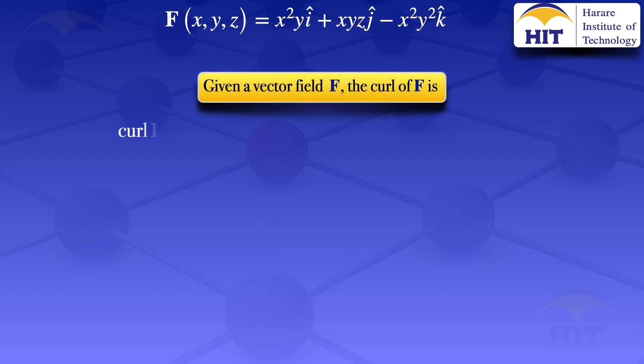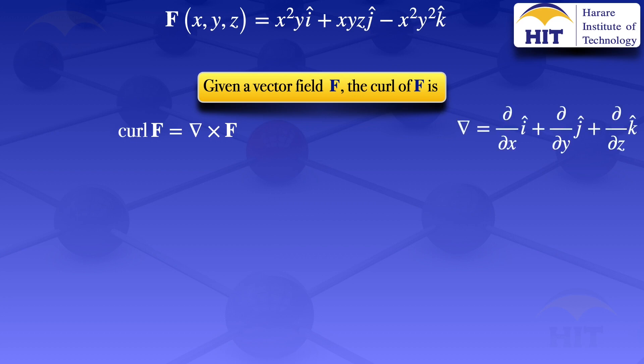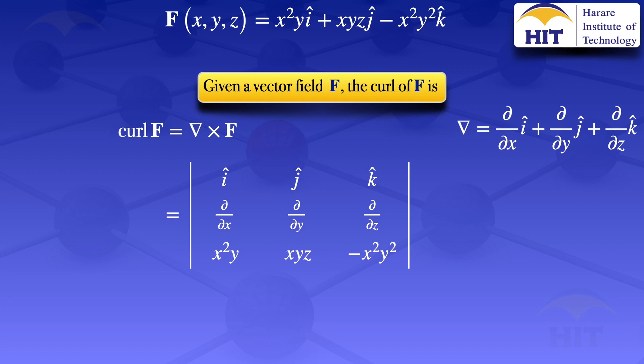Given any vector field F, the curl of F is ∇ × F, where ∇ has the partial derivative with respect to x as î, the partial derivative with respect to y as ĵ, plus the partial derivative with respect to z as k̂. To evaluate the curl we evaluate the 3×3 determinant whose first row is î, ĵ, k̂; the second row is the partial derivatives with respect to x, y, and z; and the third row is the elements of the vector field F: x²y, xyz, and −x²y².